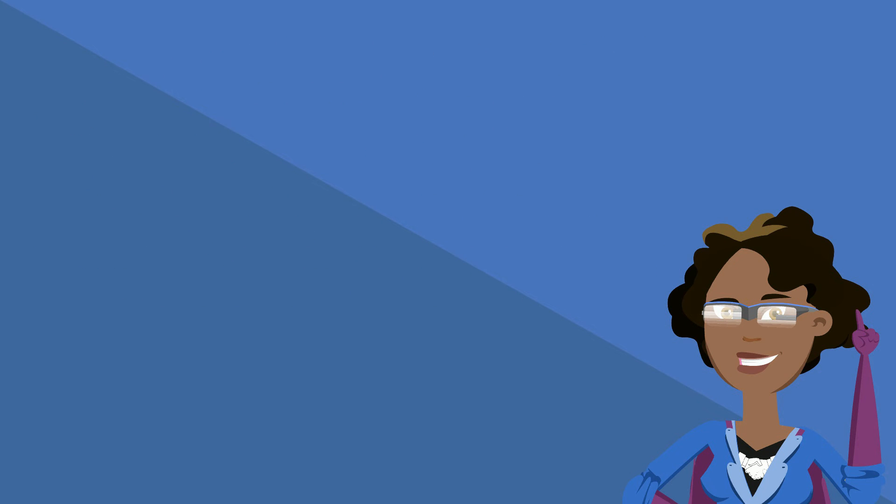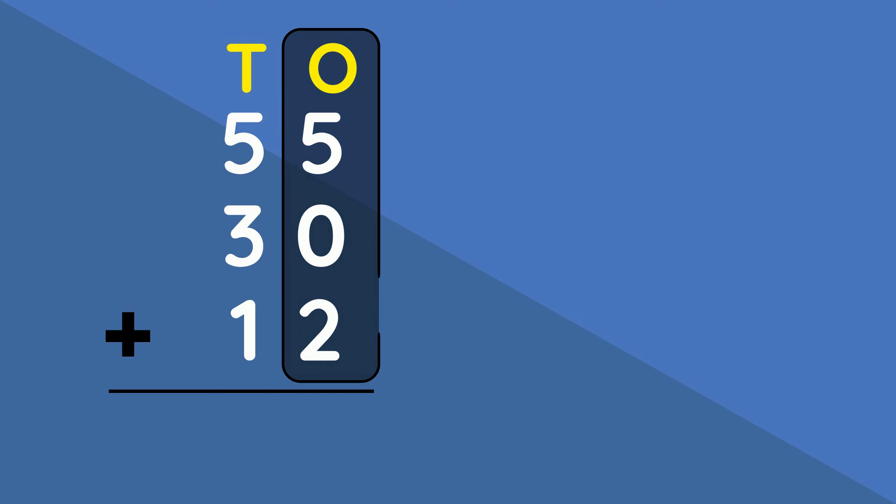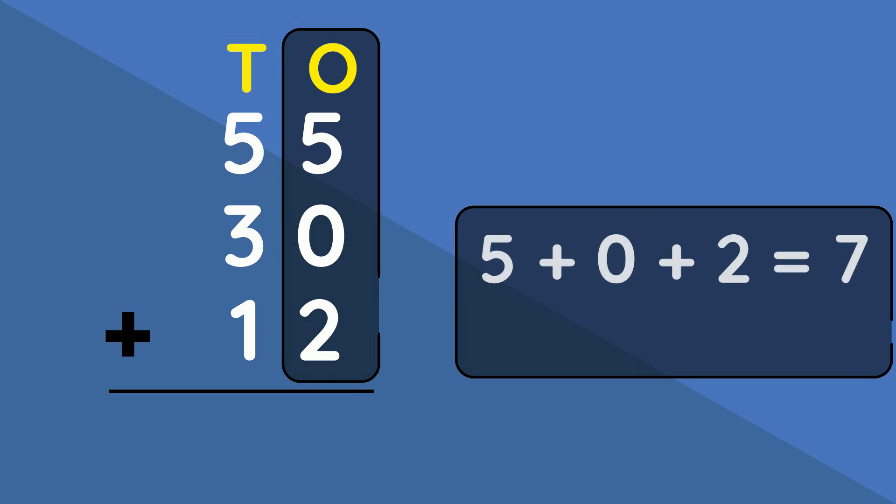What would our equation look like for this question? $55 added to $30 added to $12. So let's look at our ones column first. Five added to zero added to two gives us seven.